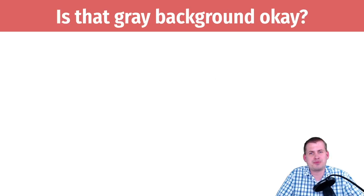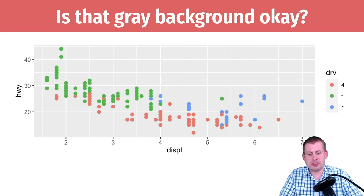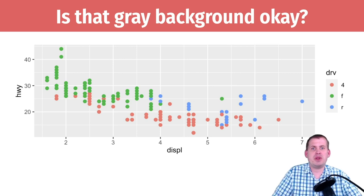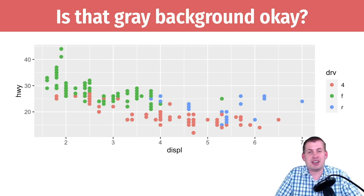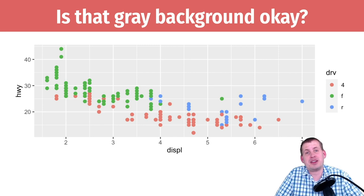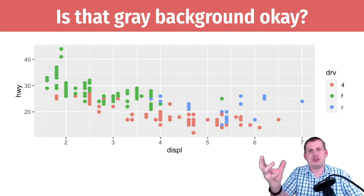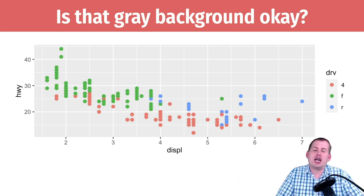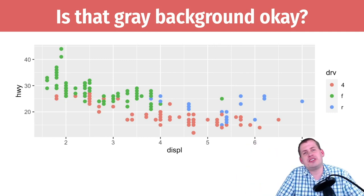In your readings, I had you look at a couple of different blog posts debating the gray background in ggplot. It's one of the most contentious things online when people talk about ggplot — some people absolutely hate this gray background. Hopefully in your readings you saw one perspective that it's kind of extra chart junk we don't need. But according to the author of ggplot, he loves it because it adds contrast and makes it easier to read the plot.